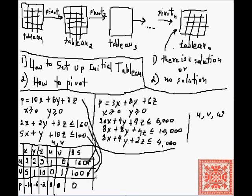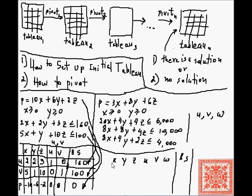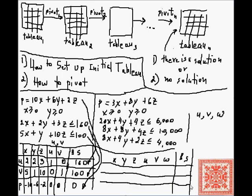The variables not mentioned on the left are set to zero value. So x, y, and z have values of zero in the tableau on the left, whereas u has the value of 160 and v has the value of 100. That gives us an initial basic solution. The check row value in the bottom-right cell is zero, because that's the initial value of the objective function.